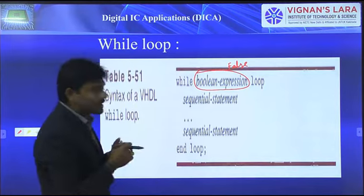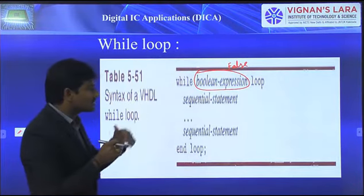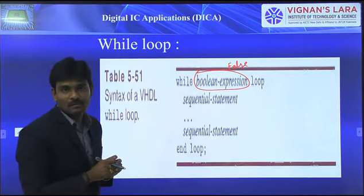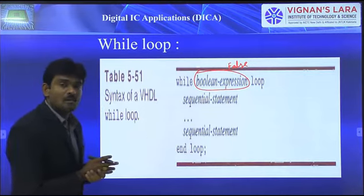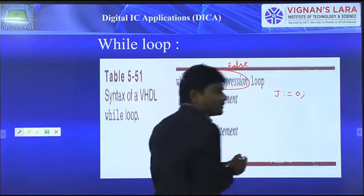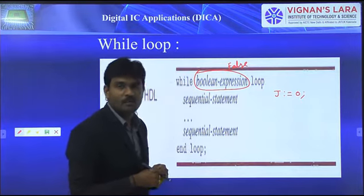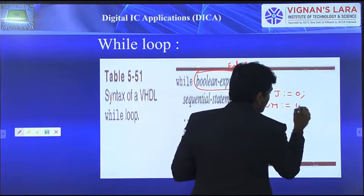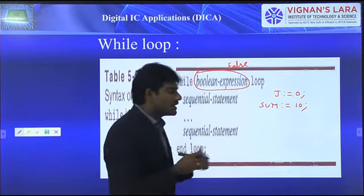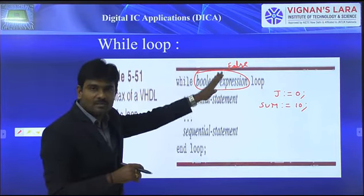Based on this, we will look at one particular example. I am not mentioning the entity and architecture declarations here — just the statements required to explain how the while loop executes. Initially I consider two temporary variables: j is assigned a value of 0 using the colon-equals operator, and sum is assigned a value of 10.